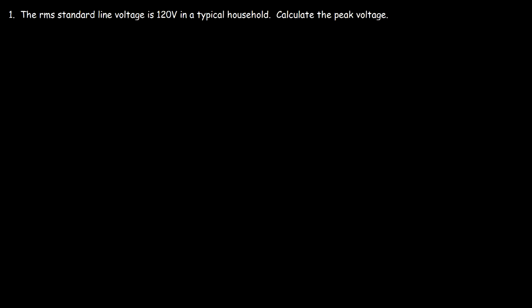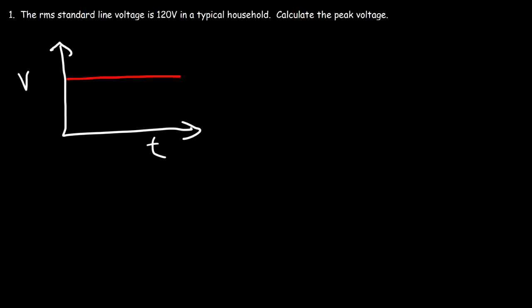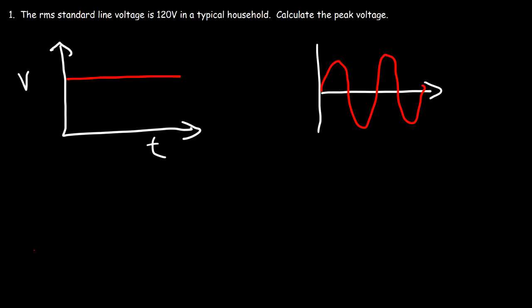Before we go over this problem, let's talk about the difference between DC current and AC current. DC represents direct current and AC is alternating current. If you graph these two — plotting voltage versus time or current versus time — DC current has a constant voltage and therefore constant current. In the AC circuit, the voltage varies in a sinusoidal function.